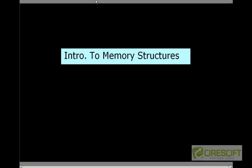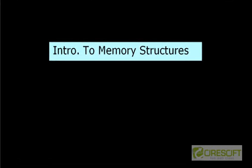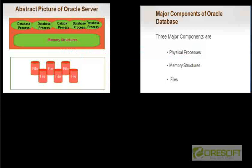Hello, welcome back to Oracle DBA tutorial. In this tutorial we are going to discuss about introduction to Oracle's memory structure. This is essentially the abstract picture of Oracle server that we have discussed in our last couple of videos — that Oracle database server consists of three things: physical processes, memory structure, and file system.